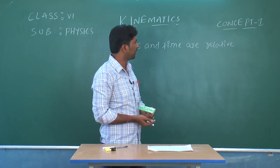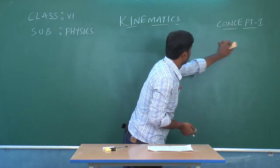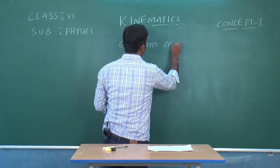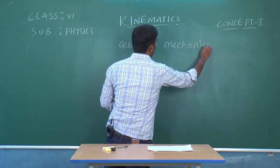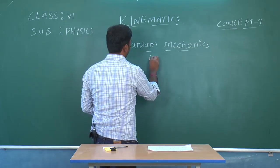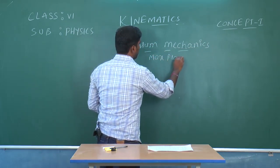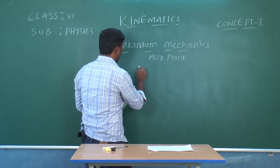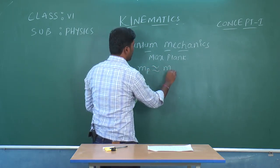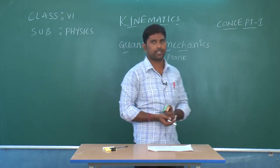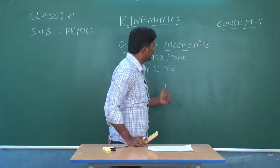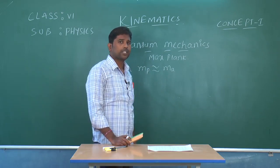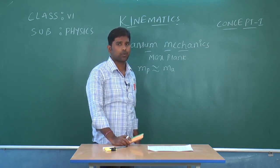Next, we are going to learn about quantum mechanics. Quantum mechanics was proposed by the scientist Max Planck. This quantum mechanics provides correct results when the mass of a particle is comparable with the mass of an atom. So here we have learned about the three different types of mechanics: Newtonian mechanics, relativistic mechanics, and quantum mechanics.